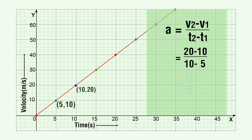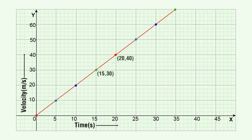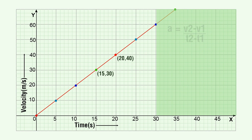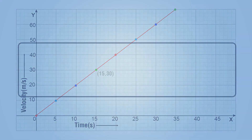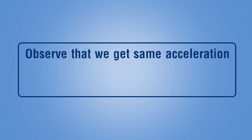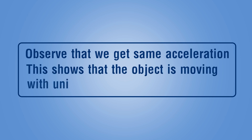Similarly, determine the acceleration of the car for another time interval by choosing different sets of points on the VT graph. Observe that we get the same acceleration — this shows that the object is moving with uniform acceleration. Similarly, determine the acceleration of the car for three more time intervals by choosing different sets of points on the VT graph.